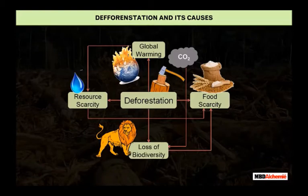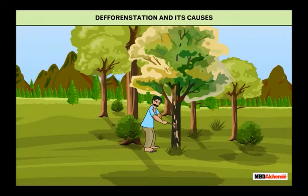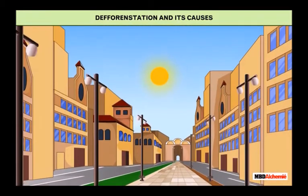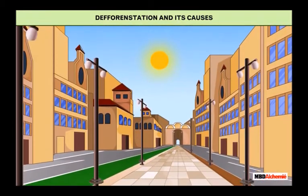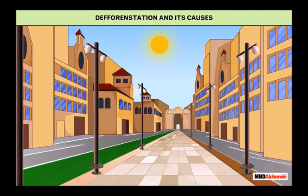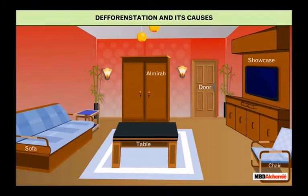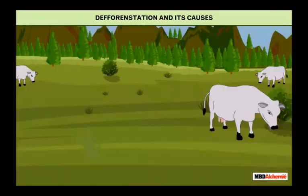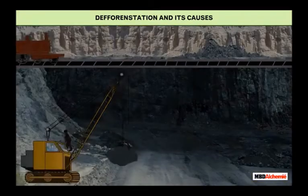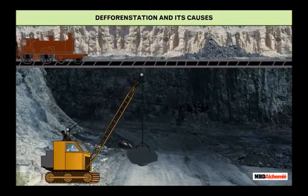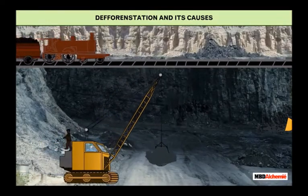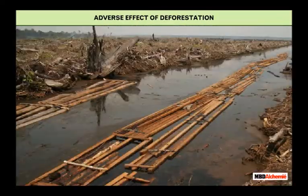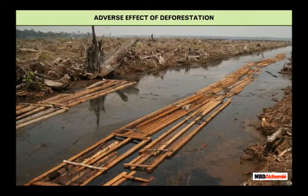The main reasons for deforestation are: cutting of trees for agricultural purposes, cutting trees for building roads, industries and houses, cutting trees for meeting the constantly increasing demand for wood and timber, overgrazing by animals, and cutting trees for mining activities.